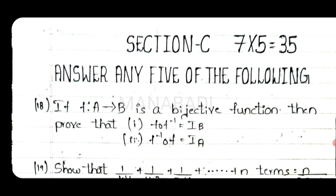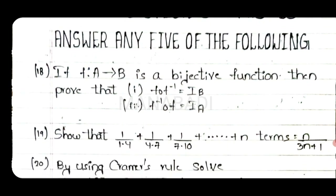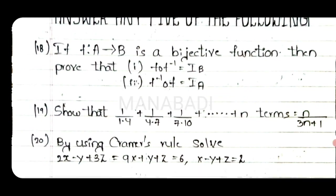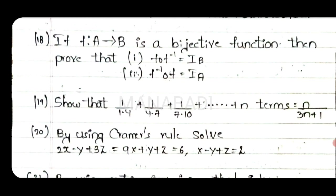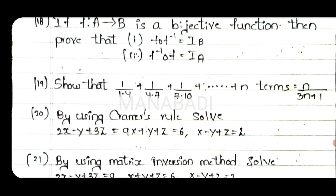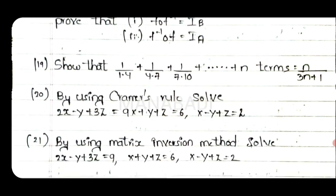Answer any 5 of the following, 5 marks each. If f of A maps to B is a bijection, then prove that — function, prove. Next, 19th question: show that 1 by 1.4 plus 1 by 4.7 plus 1 by 7.10 up to n terms equals n by 3n plus 1 — prove.